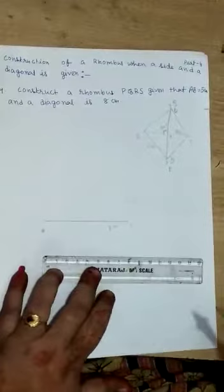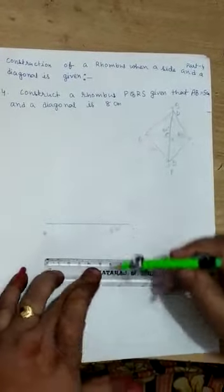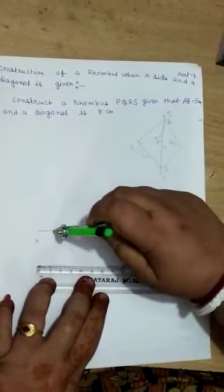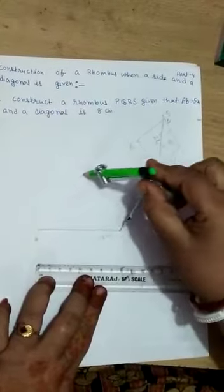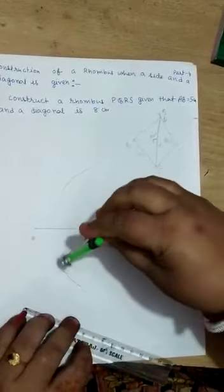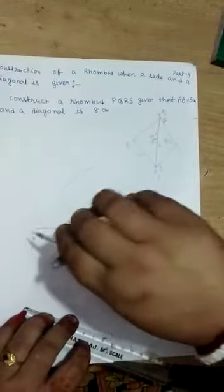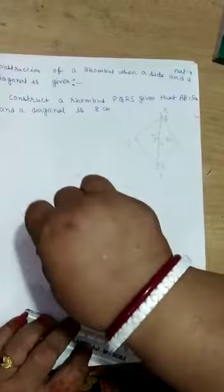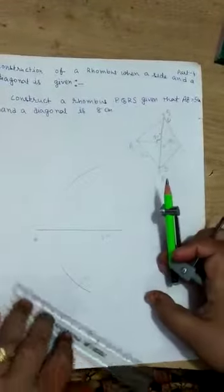Now, you perpendicular bisect this AC perpendicularly. Like this. First, you draw an arc like this. I think you have done in your previous class how to bisect perpendicularly.